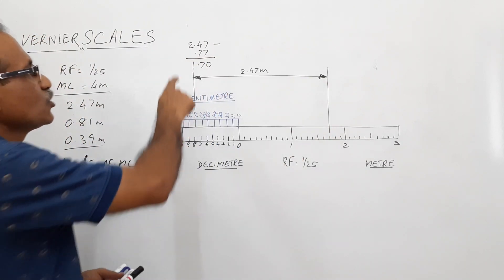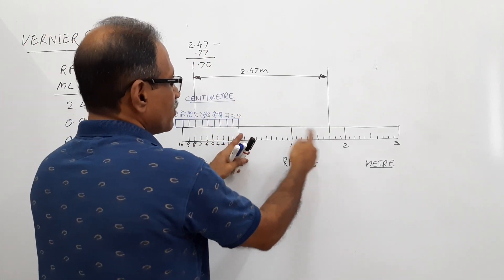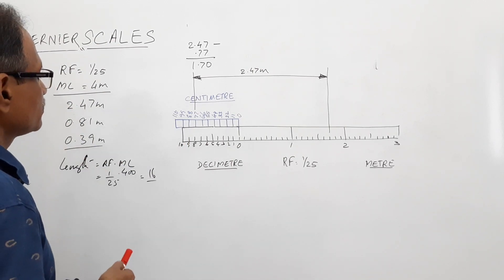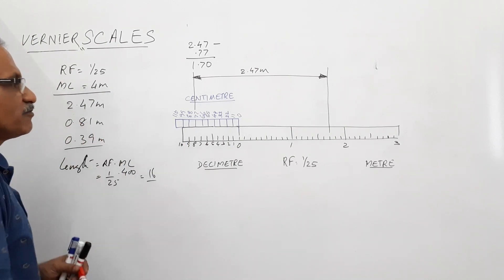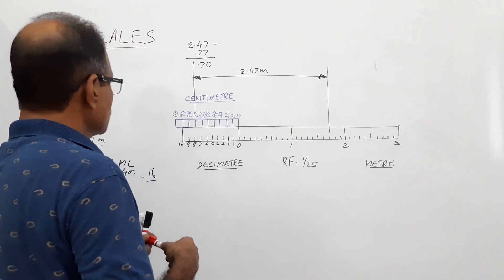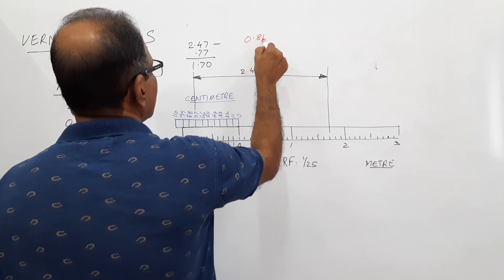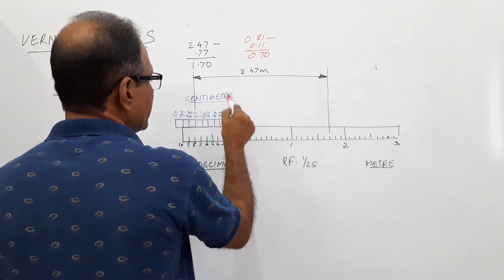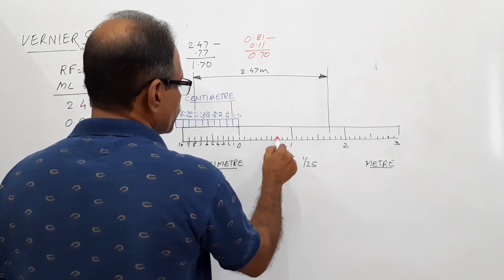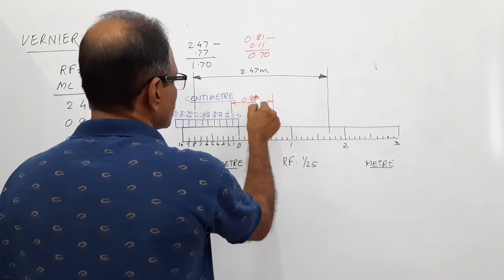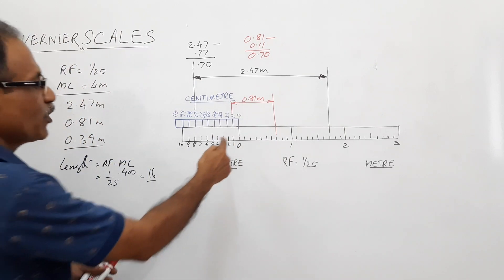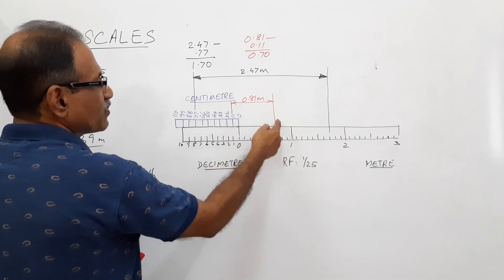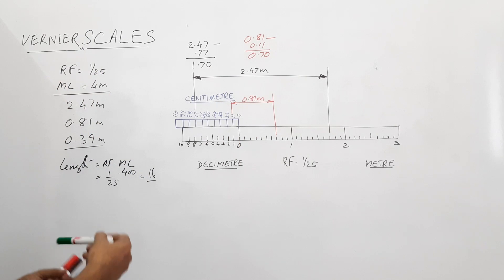To confirm: 0.77 to the left side and 1.7 to the right side gives a total of 2.47. The second distance is 0.81 meters. It ends with a 1, and the only vernier division ending with 1 is 11. So 0.81 minus 0.11 equals 0.70. Take 0.11 from the vernier and 0.7 from the main scale — total is 0.81.